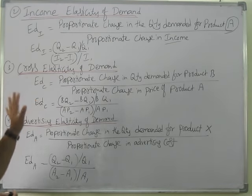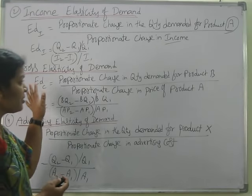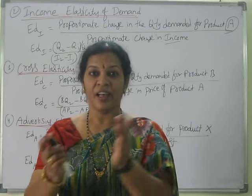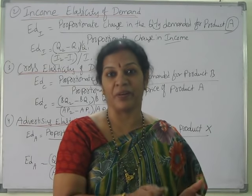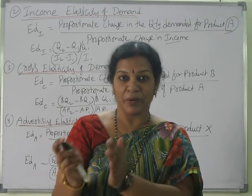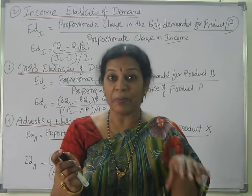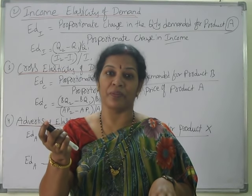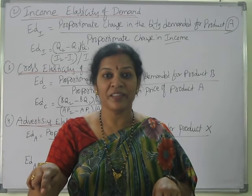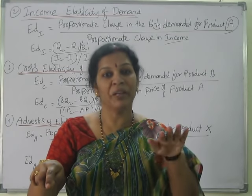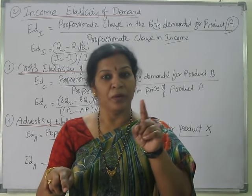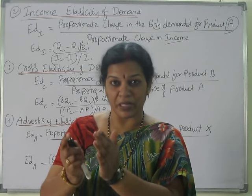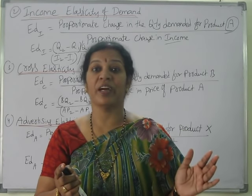The third type is cross elasticity of demand. Cross elasticity says that one product's price increasing or decreasing makes a difference in the demand of another product. When one product's price is increasing, our product's demand will be more. If they are decreasing the price, then our product's demand will go down. Whatever changes happen to a particular product's price, that makes a difference in another product's demand as well.